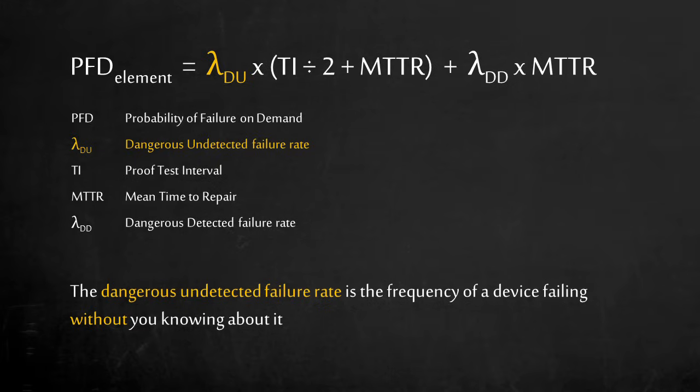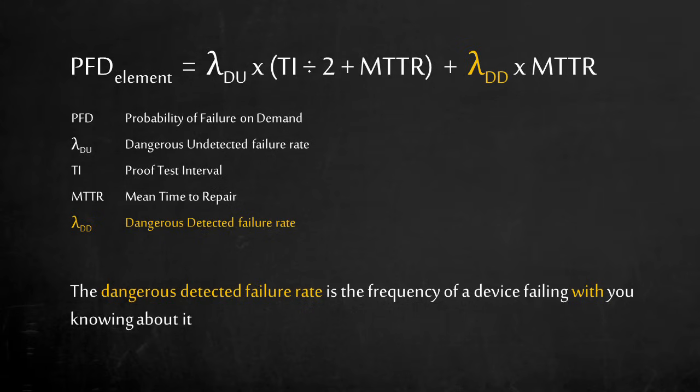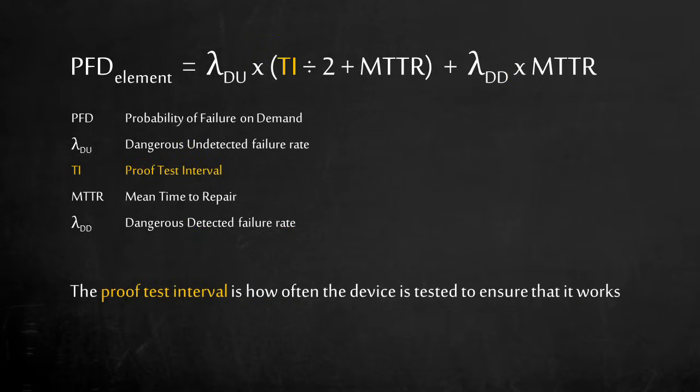The dangerous undetected failure rate is the frequency of a device failing without you knowing about it. It is a hidden failure rate. The dangerous detected failure rate is the frequency of a device failing with diagnostics to alert you of a fault in the system. The proof test interval is how often the device is tested to ensure that it works. The mean time to repair is the time required to repair or replace a device.